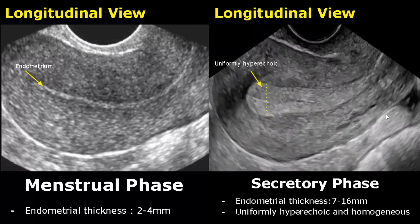In the secretory phase, we may see the maximum thickness of the endometrium. It can be between 7-16 mm, and it will appear hyperechoic, smooth and homogeneous.